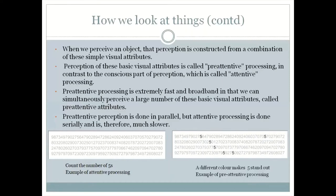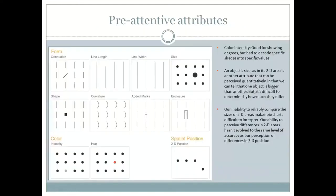In contrast, the same strip with a pre-attentive attribute of color intensity lets you see the fives distinctly. These are the popular kinds of pre-attentive attributes that exist. Under 'form' you have various options, under 'color' you have hue and intensity, and there is also spatial position. These pre-attentive attributes form the basis for all the charts, graphs, and pies that we use in day-to-day work.